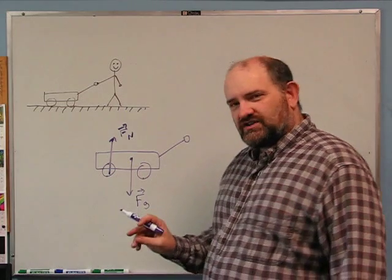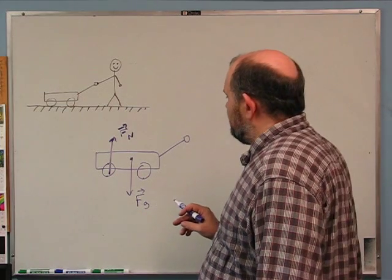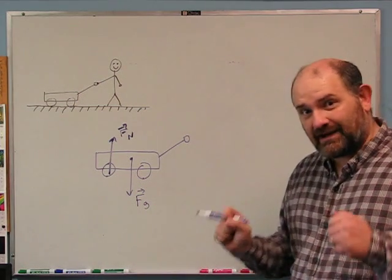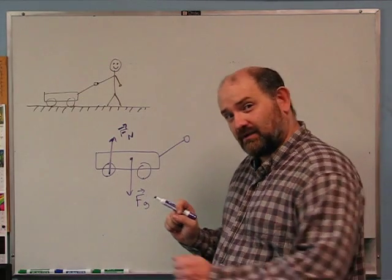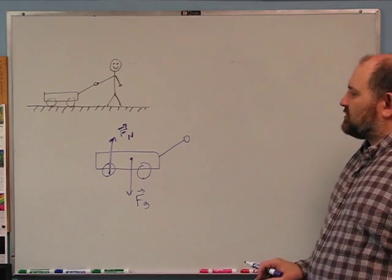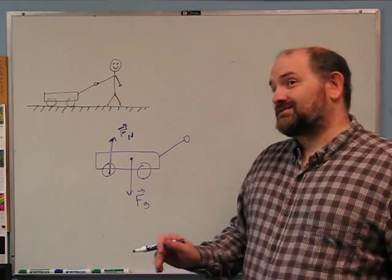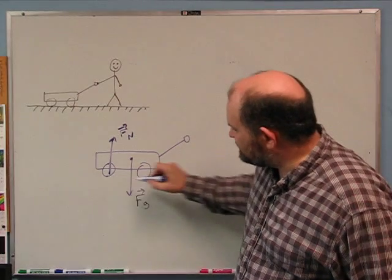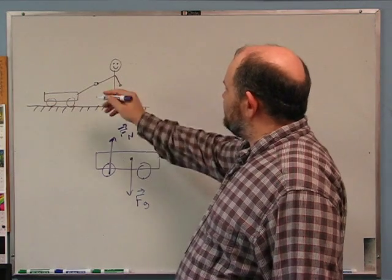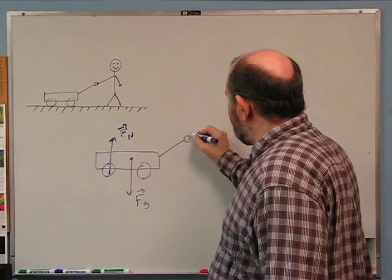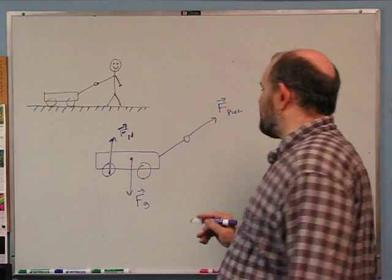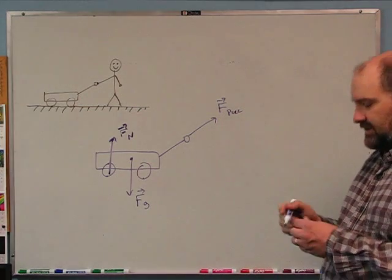Later it will matter which wheel the force is on — for example, the front brake on a bicycle matters more than the back brake when really trying to stop. But we'll get to that later. So there's the normal force of the interaction of the ground pushing back up on the wagon. Finally, there's an F pull — it's the child pulling on the wagon — essentially a tension force.